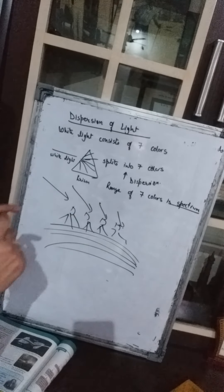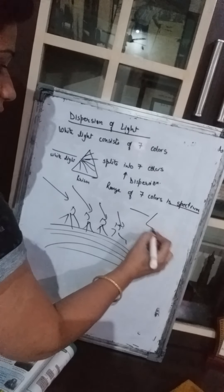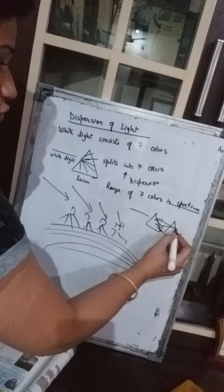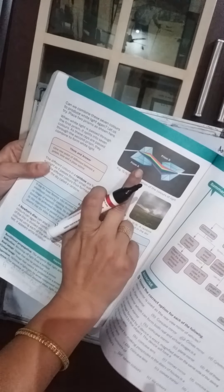Now, can those seven colors be recombined into white light? Yes — if you put two prisms facing each other, when the light passes through the first prism it splits into seven colors, and when those seven colors pass through the second prism they come out combined as white light again.